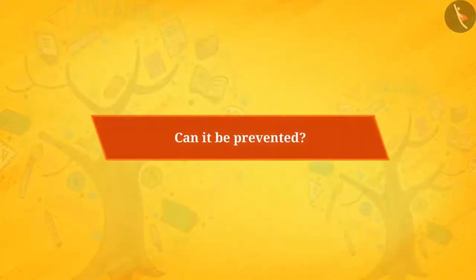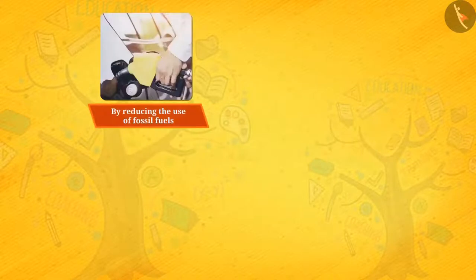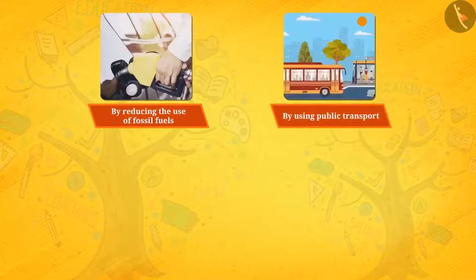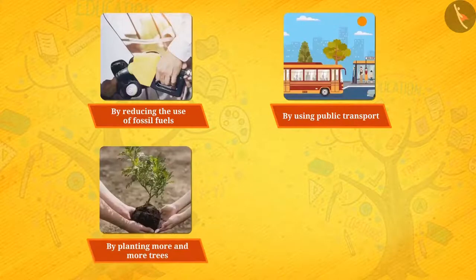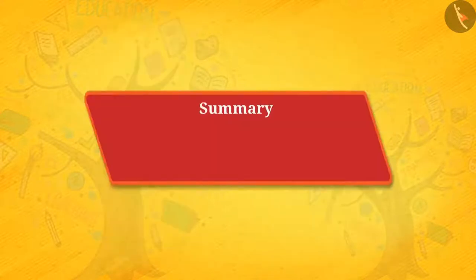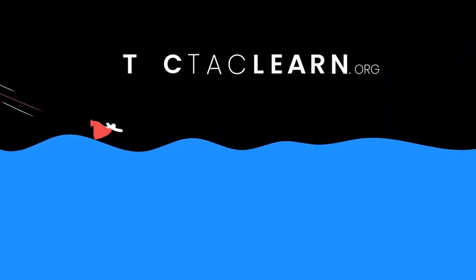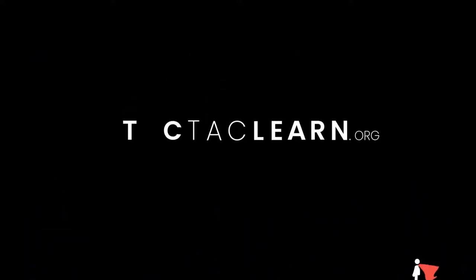But can it be prevented? Yes, air pollution can be prevented. By reducing the use of fossil fuels, by using public transport, by planting more and more trees, and by using energy-saving appliances, we can prevent air pollution. So, what did you learn in this video? The importance of air and air pollution. In the next video, we will study water and water pollution.